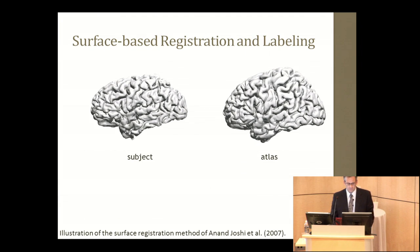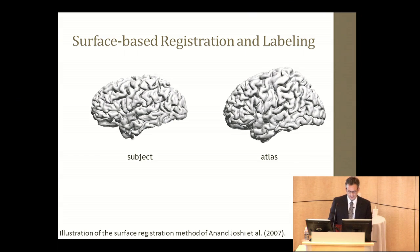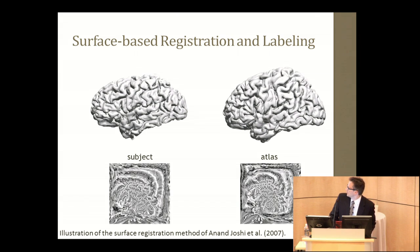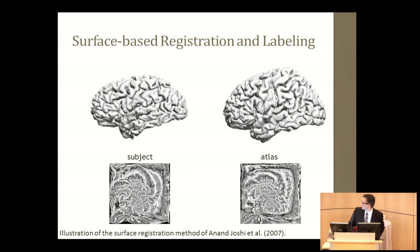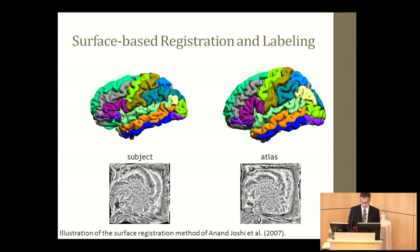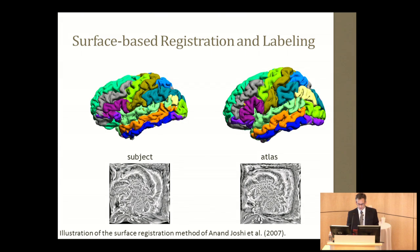In brain imaging, we're often very concerned about the convoluted features of the cortex. A number of surface-based registration methods have been developed that match these features across subjects. In the example shown here, we've taken the hemispheres of a subject and modeled them as surface meshes. These meshes are mapped to a flat plane and we look at the curvature maps of these cortical surfaces. We can distort them to match each other, giving us a one-to-one mapping from the subject to the atlas. We can then take the labels and convect them across this mapping to produce a labeling of the subject. This is useful for studies such as the analysis of brain activation where we want to localize function in individuals and compare cortical anatomy.